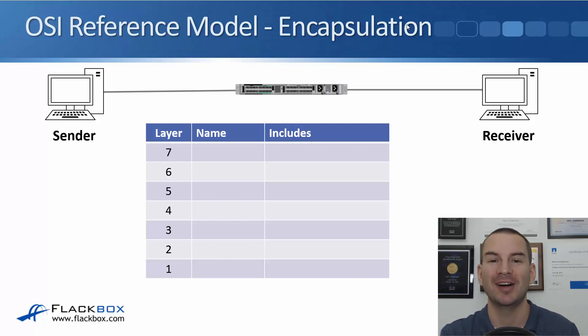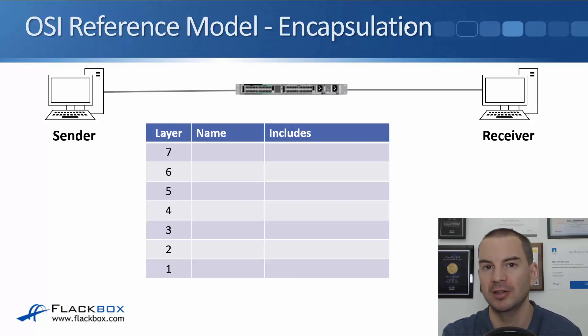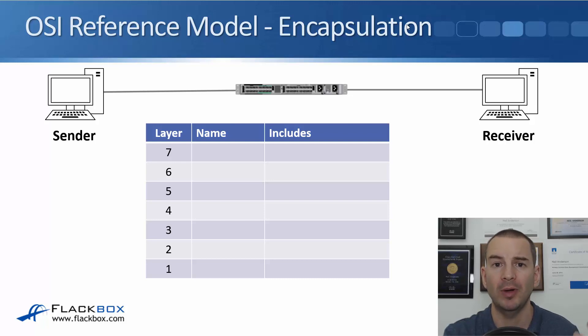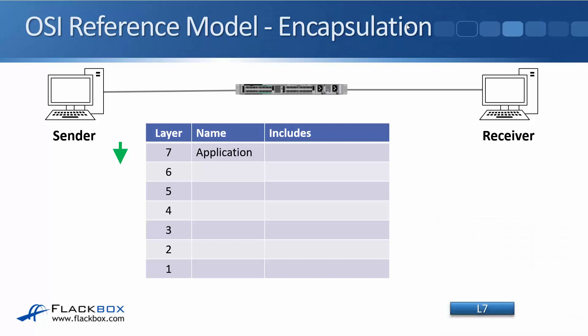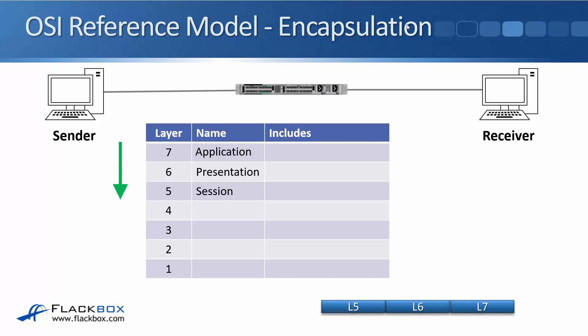We're going to use the OSI stack model for this — pretty much the last time you'll see it in the course, but it's really fundamental to how networking works. We're going to compose that web traffic and send it to the web server from our source on the left, starting with the application layer, then encapsulating through the presentation and session layer headers. Then at layer 4, the transport layer, this web traffic is going to be sent with TCP and the destination port is going to be port 80.